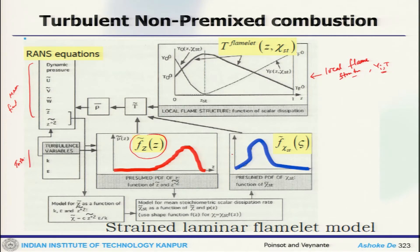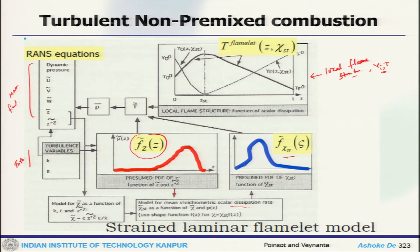We also have a presumed probability distribution function for Xi (scalar dissipation rate), which is a log-normal distribution. We feed the information of Z and Z variance, and model Xi as: Xi = C_phi × (epsilon / k) × mixture fraction variance. From the mean scalar dissipation rate and the shape function, using the distribution function and the information of mean scalar dissipation rate, we find the presumed PDF of Xi_stoichiometric, which is typically the log-normal distribution.